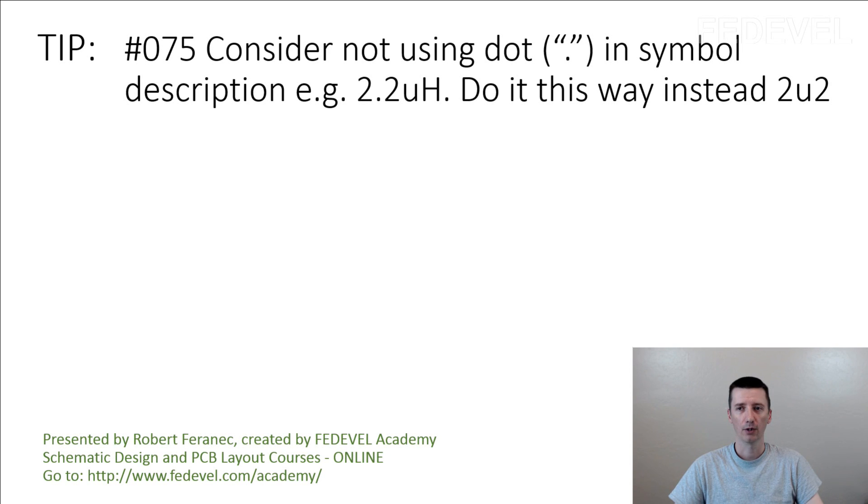Tip number 75. Consider not using dot in symbol description, for example 2.2 microhenry. Do it this way instead: 2 micro 2.